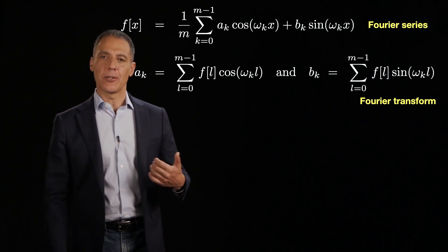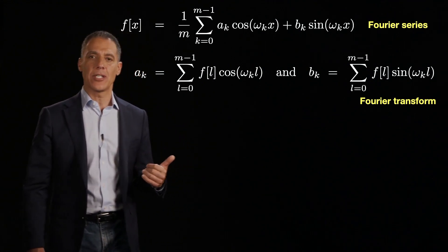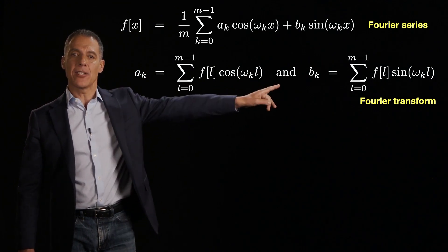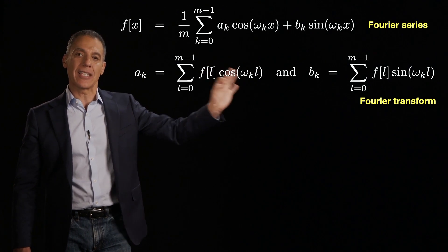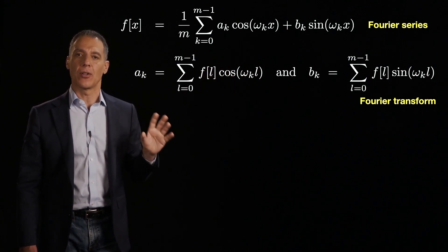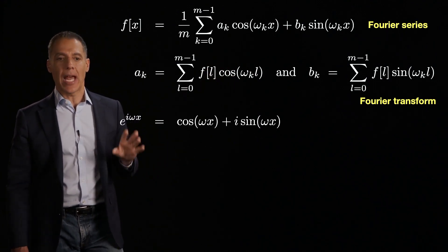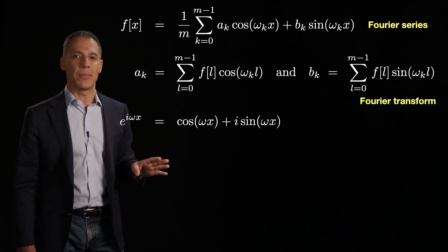And so what you will see in the literature, and the reason why I'm going to do it here is you will see this everywhere, is there is a mechanism to combine these two basis into a single basis using the so-called complex exponential.